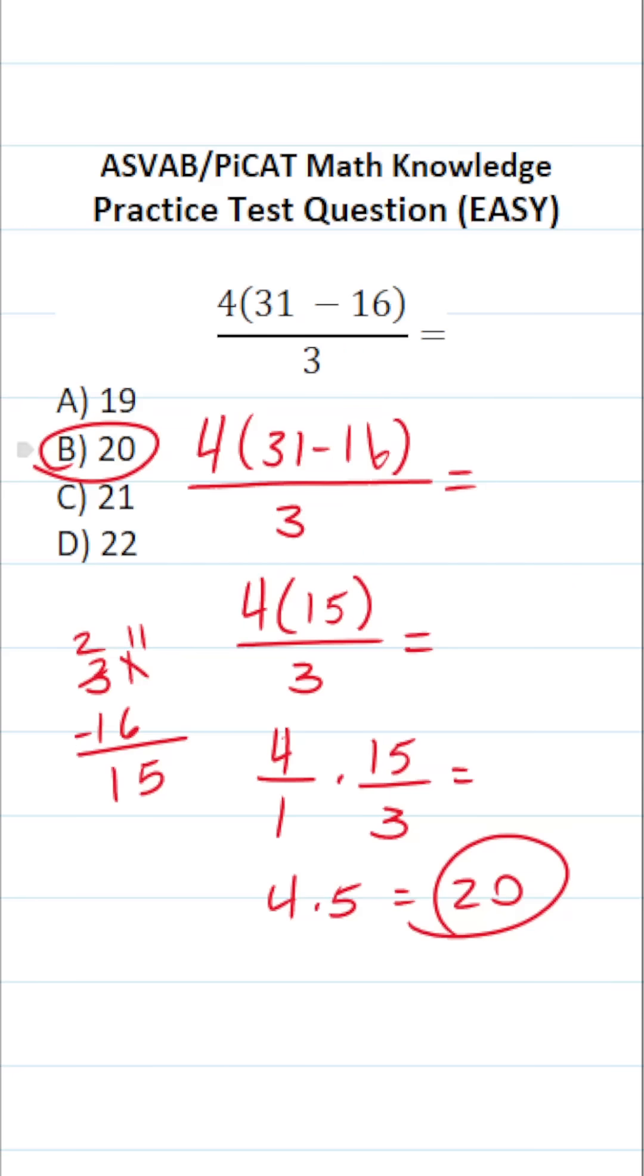For this one, there are a lot of different routes that you could have taken. The key is not to mess up this part right here, 31 minus 16.